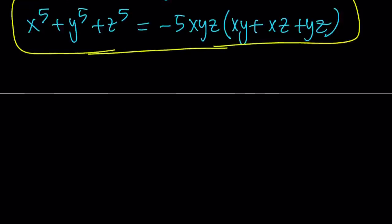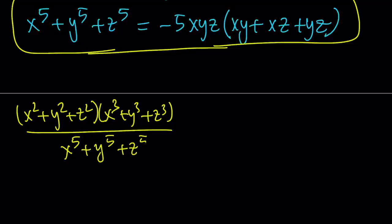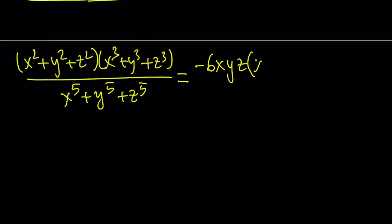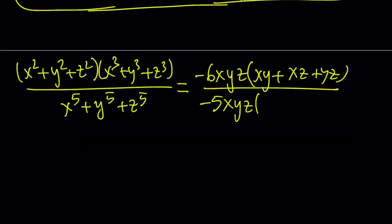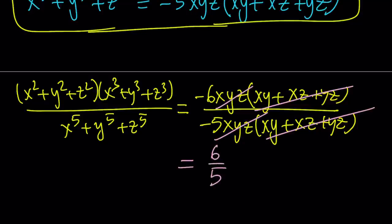Our original expression was x squared plus y squared plus z squared times the sum of cubes, divided by the sum of the fifth powers. The numerator can be replaced with negative 6xyz times (xy plus xz plus yz), and the denominator — the sum of fifth powers — can be replaced with negative 5xyz times (xy plus xz plus yz). Provided that xyz and (xy plus xz plus yz) are not zero, we can simplify, and we get 6 over 5 as the numerical answer. This brings us to the end of the first method.